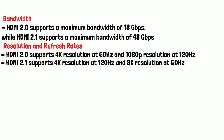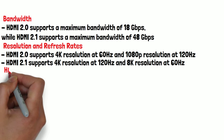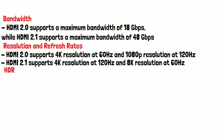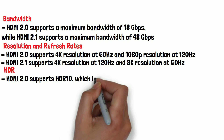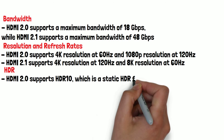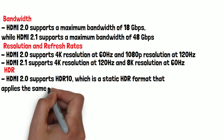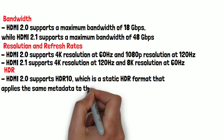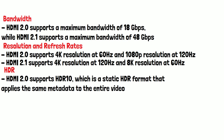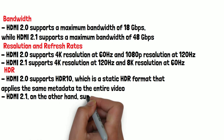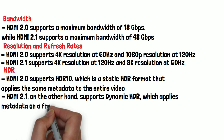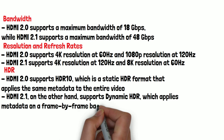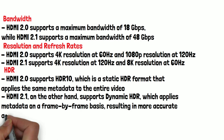Both versions of HDMI support a version of HDR. HDMI 2.0 supports HDR10, which is a static HDR format that applies the same metadata to the entire video. HDMI 2.1, on the other hand, supports dynamic HDR, which applies metadata on a frame-by-frame basis, resulting in more accurate and vibrant colours.